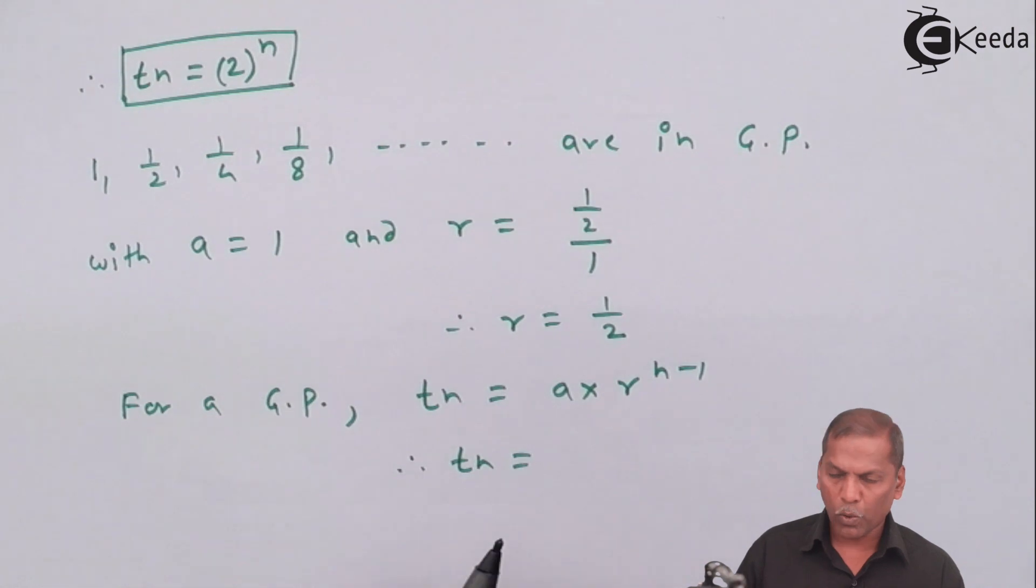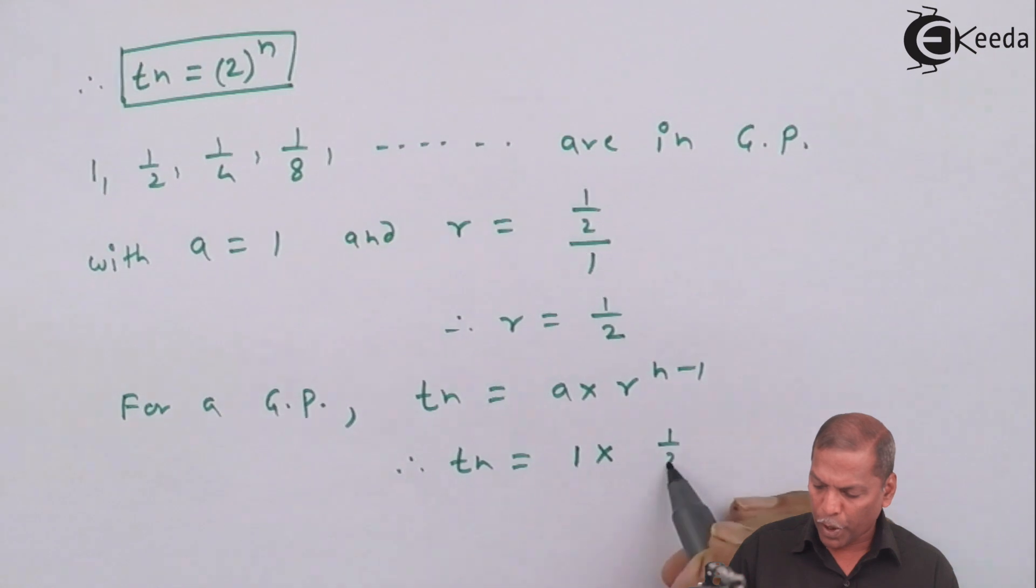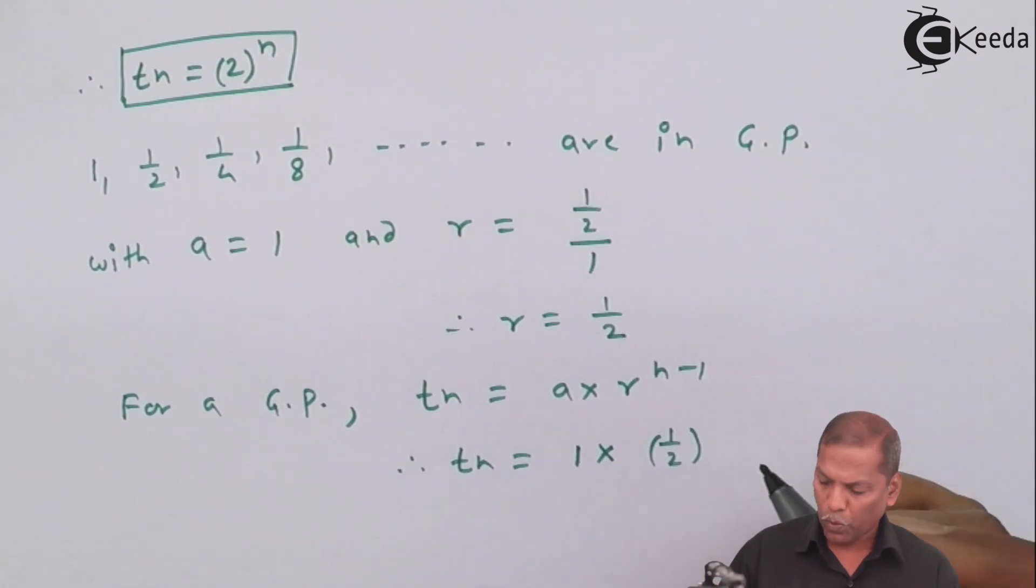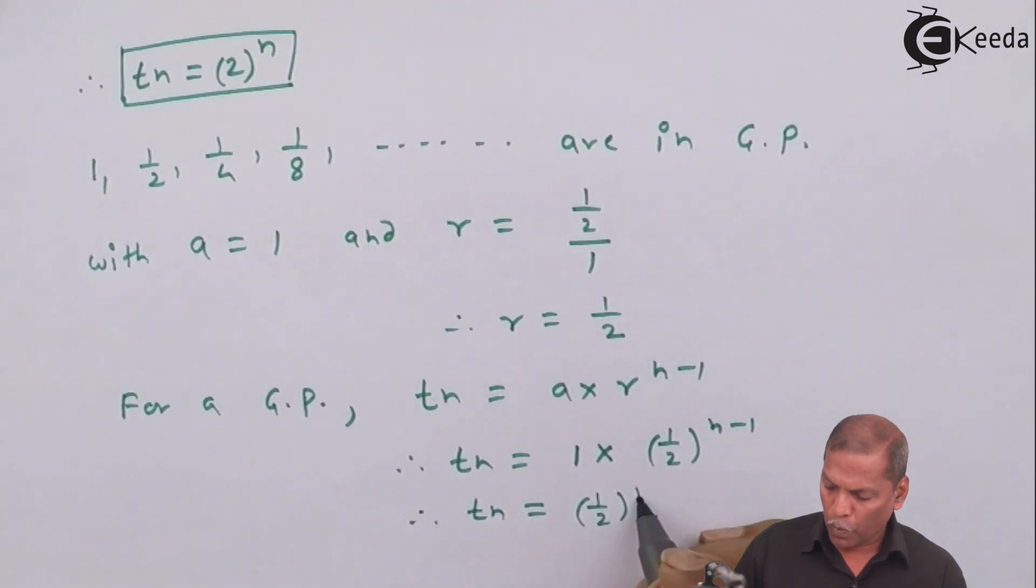Tn equals, now for a, we substitute 1 and for r, we substitute 1 by 2 whole bracket raise n minus 1. So on simplifying further, we get Tn equals 1 upon 2 whole bracket raise n minus 1.